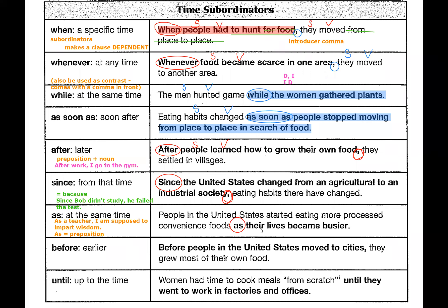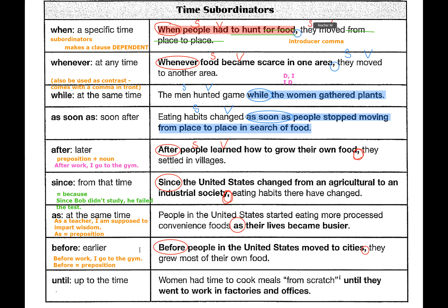And 'before': 'Before people in the United States...' — the subordinator is in front, so we have a dependent clause, introducer comma, then independent clause. 'Before' can also be a preposition: 'Before work, I go to the gym.' Last but not least, 'until': 'Women had time to cook meals from scratch until they went to work in factories and offices.' Here 'until' comes in the middle of the sentence, so there is no comma — it's Independent then Dependent.